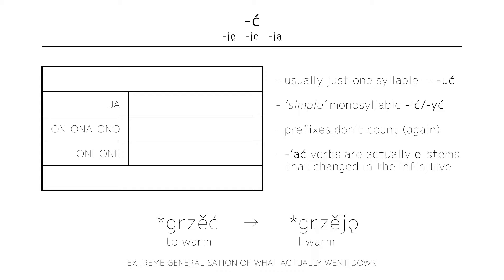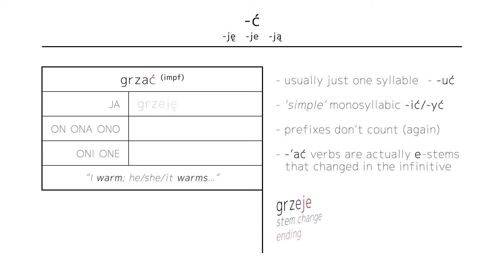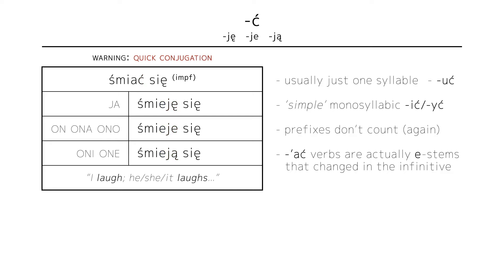So we have words like GRZAĆ to warm, which conjugates as GRZEJĘ, GRZEJĘ, GRZEJĄ. Other words like this are ŁAPAĆ to paw, SZYĆ to sew, ŚMIAĆ to laugh and WIAĆ to blow, like the wind.